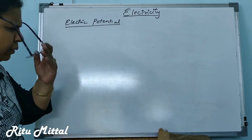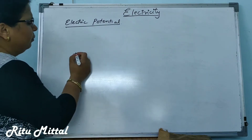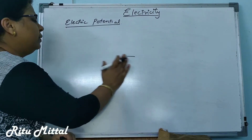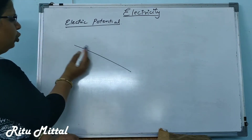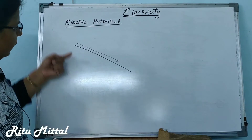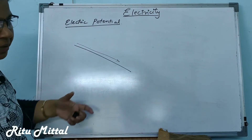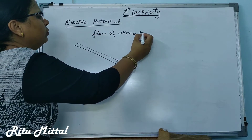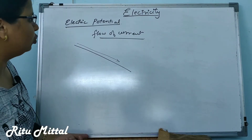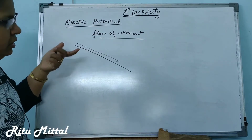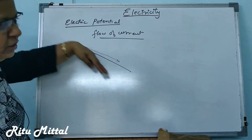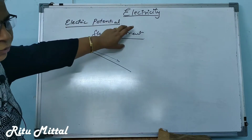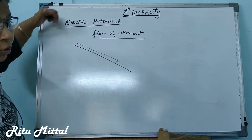Think of it like the flow of water. For water to flow, there must be a difference in level — water goes from a higher level to a lower level. Same way, if you want current to flow in a circuit, there should be a potential difference. Current always flows from higher potential to lower potential.